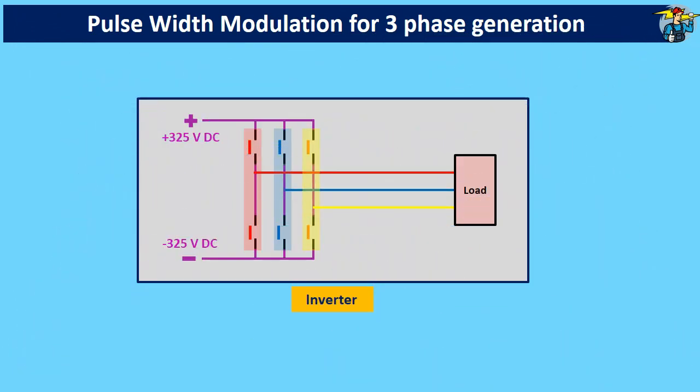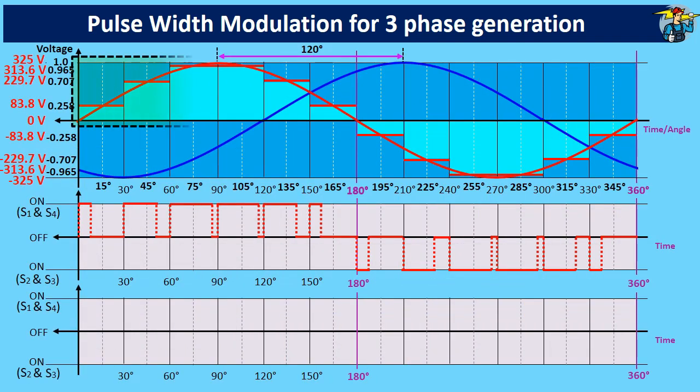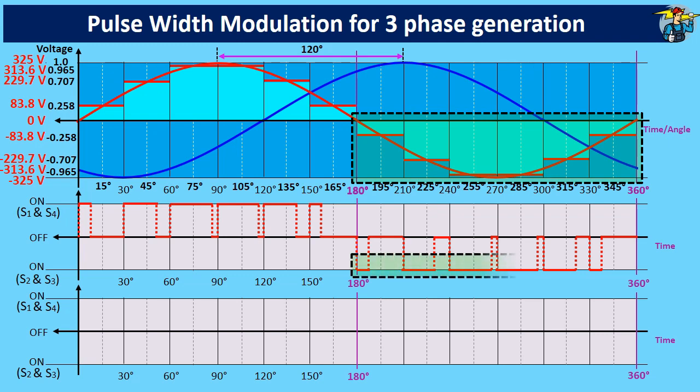However, to get a good idea, we need to review how the IGBT switches in the H bridge acted to generate a single phase sine wave. So, the positive voltage values above the zero voltage line is generated by using the S1 and S4 switches on the H bridge. Then, all the negative values are generated by using the S2 and S3 switches.